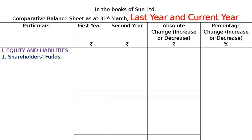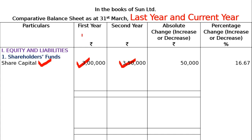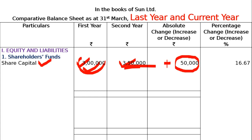Under Equity and Liabilities, write Shareholder's Funds as per the format given in the book, following the Companies Act 2013 revised format. For Share Capital: the first year value and second year value are given in the question. The calculation is: second year value minus first year value = Rs. 3,50,000 minus Rs. 3,00,000 = plus Rs. 50,000. Percentage change = 50,000 divided by 3,00,000 into 100 = 16.67%. This is your Share Capital row.